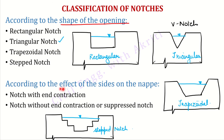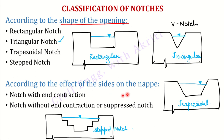According to the effect of the sides of the nappe — the side edges of the notches affect the sides of the nappe — we have two more types, which we will discuss in detail. For now, just the names: Notch with end contraction, and notch without end contraction, or suppressed notch. This is the difference based on what happens to the nappe edges when it comes out. We will discuss this in future lectures.